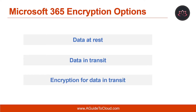Let's understand the options available for encryption for data in transit. Microsoft 365 provides data protection and security controls that allow you to protect sensitive data from accidental or malicious exposure. These controls help you adhere to compliance requirements, give access to services and content to individuals in your organization, and encrypt data in your Microsoft 365 tenant. Microsoft 365 provides three different encryption options: Information Rights Management or IRM, Secure Multipurpose Internet Mail Extension or S/MIME, and Office 365 Message Encryption. We will see all three in detail in the coming slides.